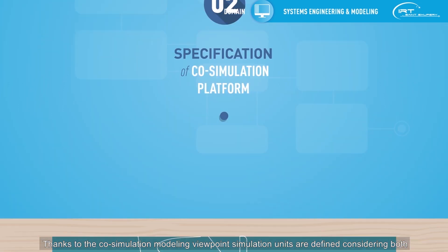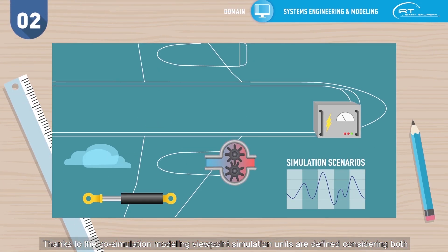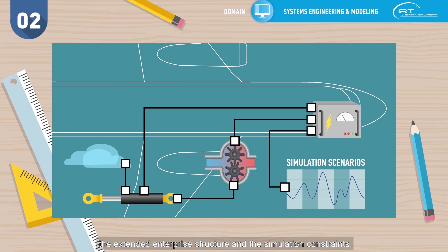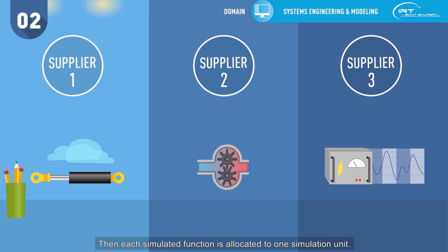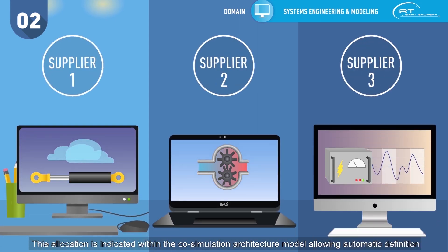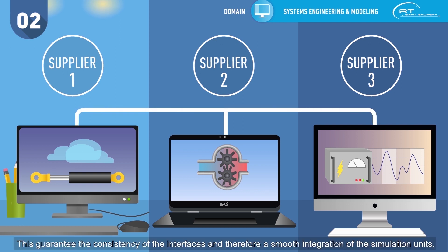Thanks to the co-simulation modeling viewpoint, simulation units are defined considering both the extended enterprise structure and the simulation constraints. Then each simulated function is allocated to one simulation unit. This allocation is indicated within the co-simulation architecture model, allowing automatic definition of the interfaces between simulation units. Interface types, units, and other properties are directly inherited from the system architecture model. This guarantees the consistency of the interfaces and therefore a smooth integration of the simulation units.